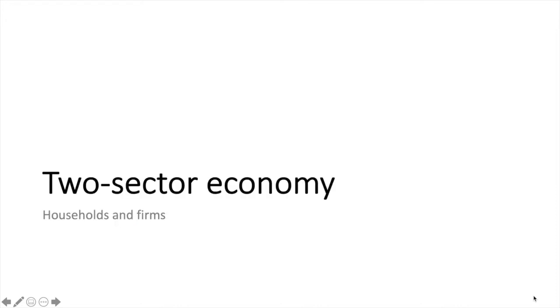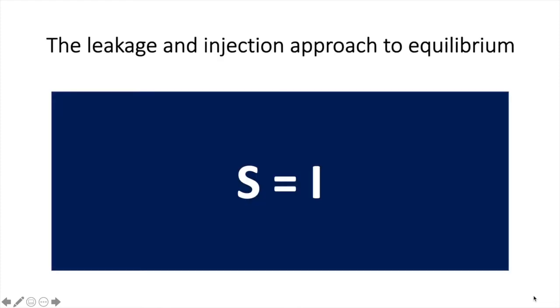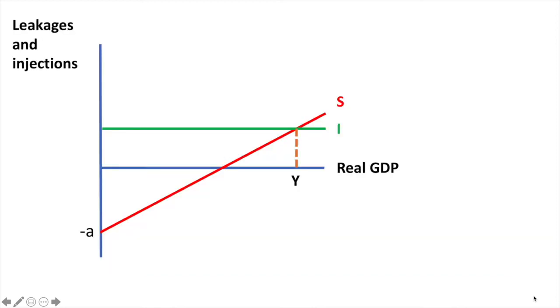The two sector economy is closed and consists of households and firms only. The only leakage in this model is savings whereas investment is the only injection. We'll use the same diagram as before but just label the two lines more specifically as seen here.